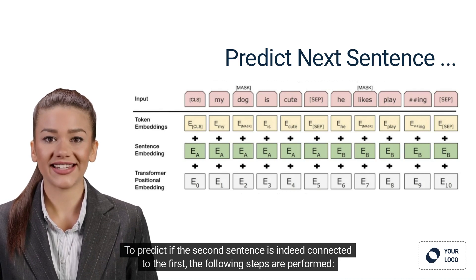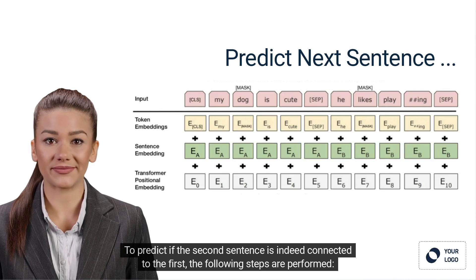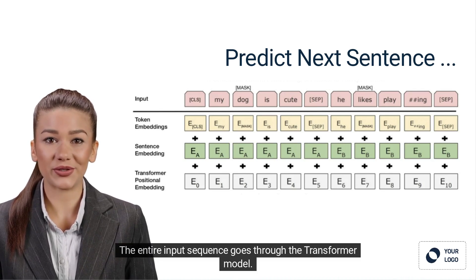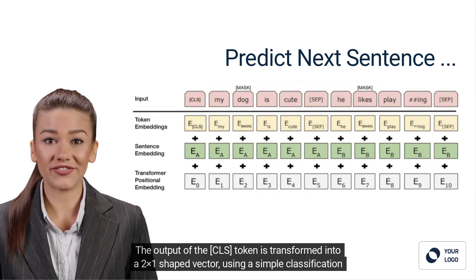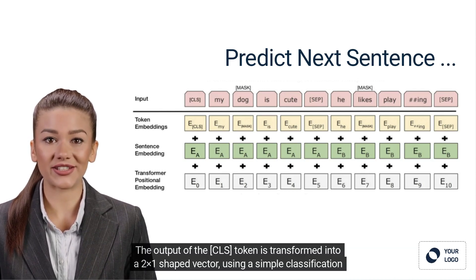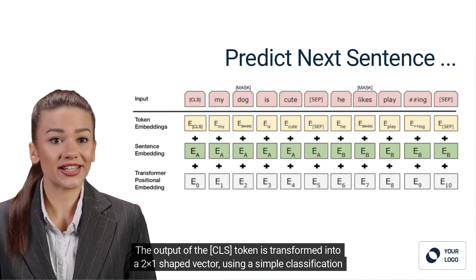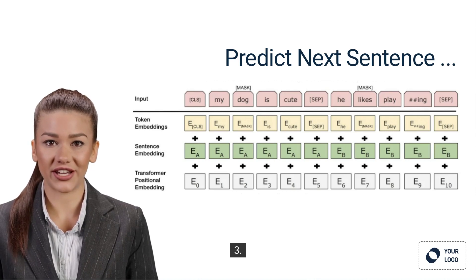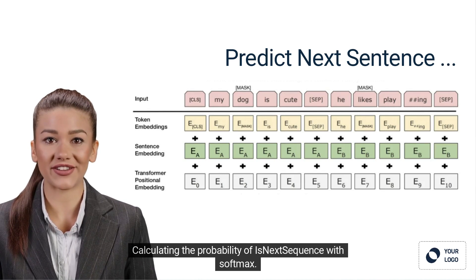To predict if the second sentence is indeed connected to the first, the following steps are performed. 1. The entire input sequence goes through the Transformer model. 2. The output of the CLS token is transformed into a 2x1 shaped vector using a simple classification layer, learned matrices of weights and biases. 3. Calculating the probability of is-next sequence with softmax.